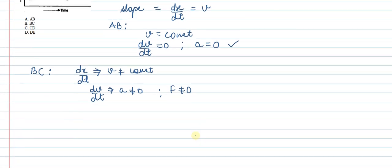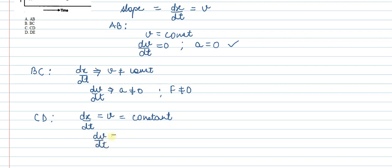Now talking about region CD — CD is again a straight line. The dx/dt, which is velocity, will be constant because the slope of a straight line is constant. If we do dv/dt, which equals acceleration, it is equal to zero. So we can say force is again zero.